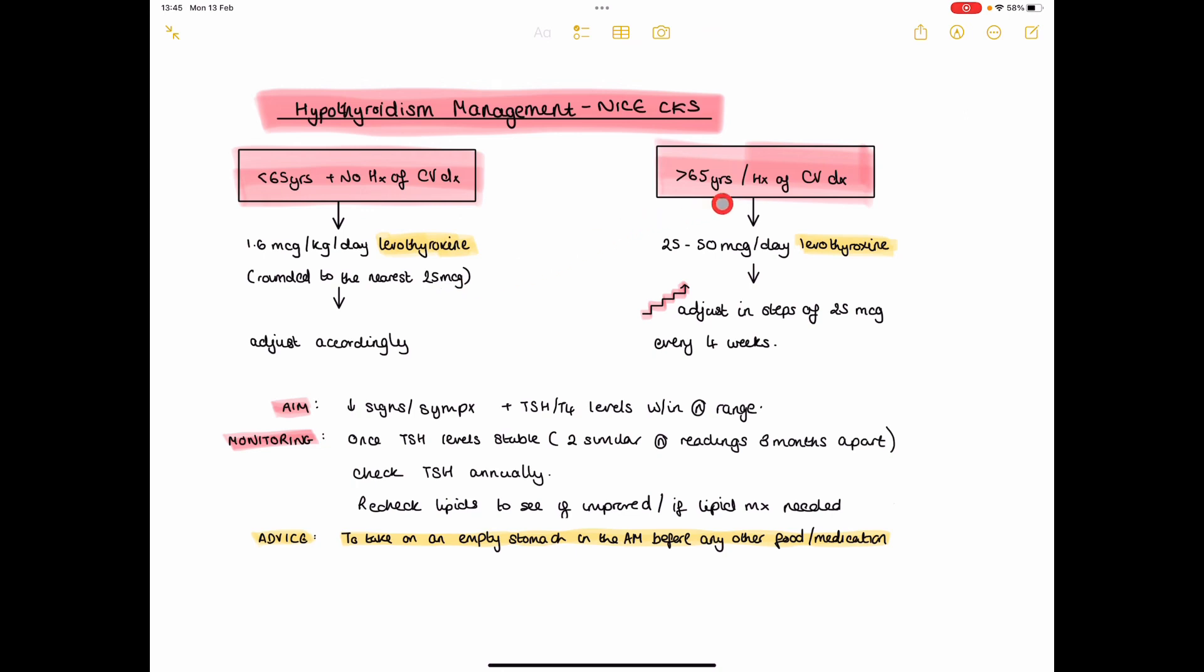If they're over 65 or have a history of cardiovascular disease, you want to start the patient on only 25 to 50 micrograms per day of levothyroxine, and adjust this in steps of 25 micrograms every four weeks.